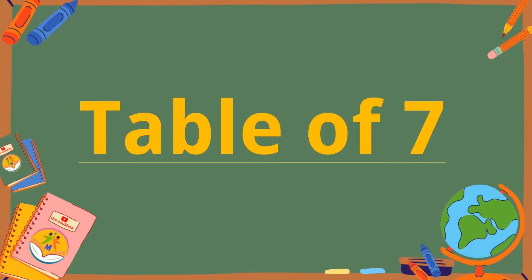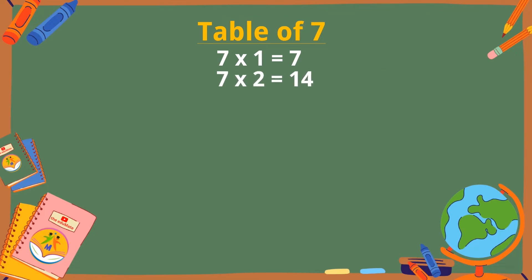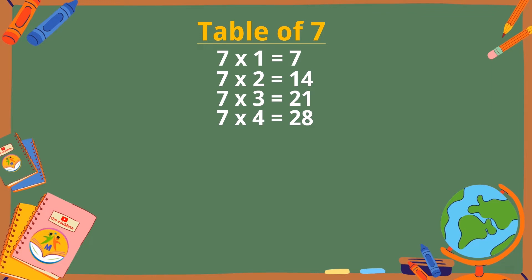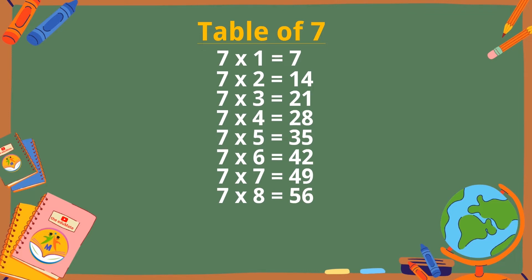Table of 7. 7×1 is 7, 7×2 is 14, 7×3 is 21, 7×4 is 28, 7×5 is 35, 7×6 is 42, 7×7 is 49, 7×8 is 56, 7×9 is 63, 7×10 is 70.